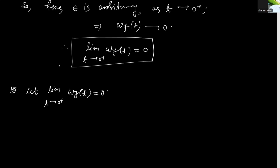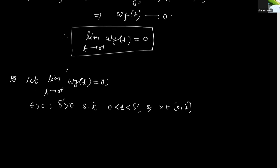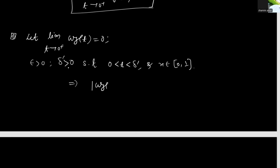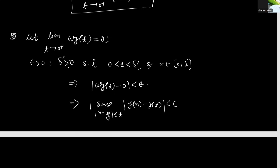Now for the converse: let the limit as t tends to 0+ of wf(t) equal 0. By the definition of this limit, given ε > 0 there exists δ' > 0 such that for 0 < t < δ', |wf(t) − 0| < ε. By the definition of wf(t), this gives the supremum of |f(x) − f(y)| over |x − y| ≤ t is less than ε.